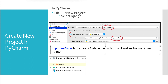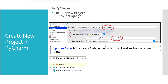In PyCharm, we will go to File, New Project, and then we select Django in the context menu that comes up. Here in Location, we'll create a name for our project. Mine's called Important Dates. Then you see here, I create a new virtual environment.